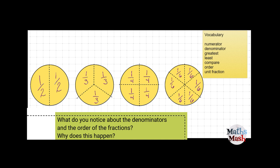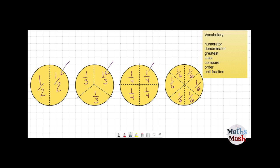So what do you notice about the denominators and the order of the fractions? Have a look here we've got one-half then we've got one-third, one-quarter, and one-sixth but look at the size of those pieces. Even though the denominator is bigger the actual piece is smaller.